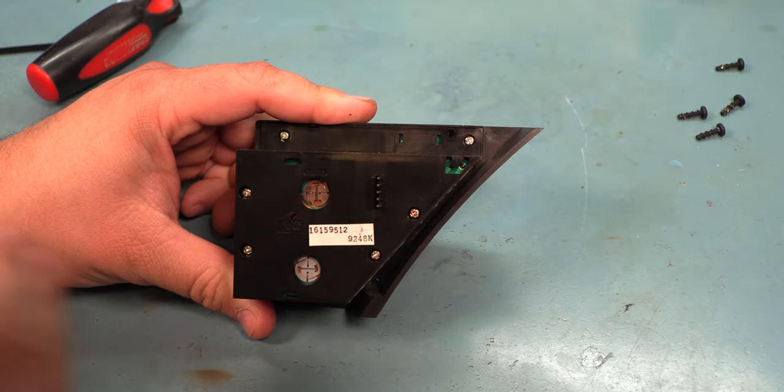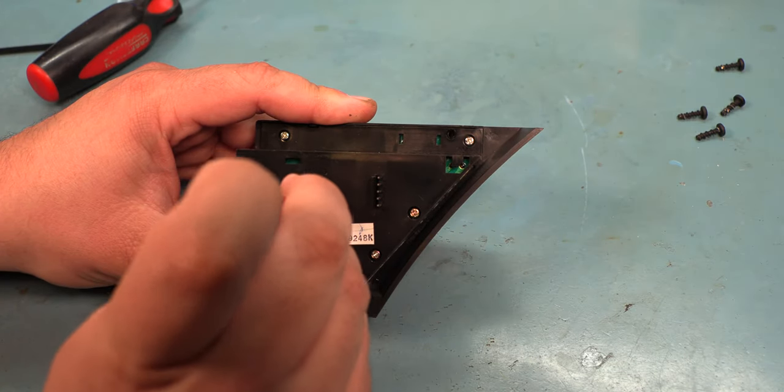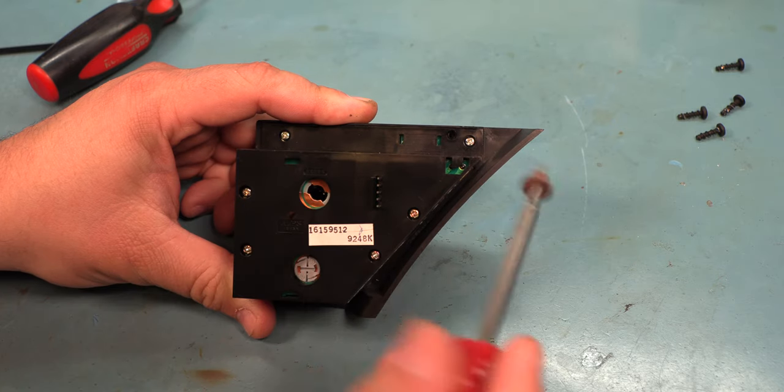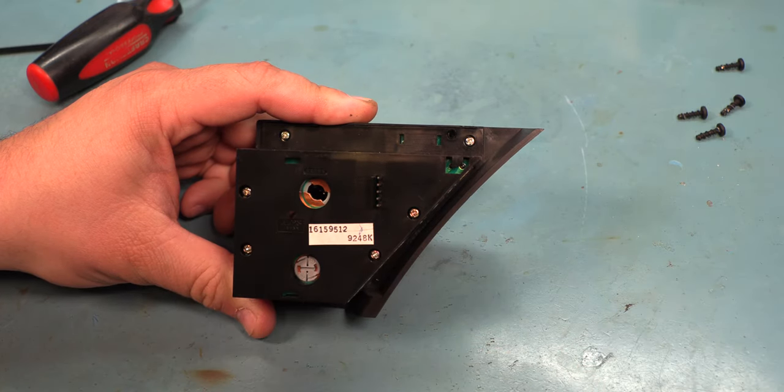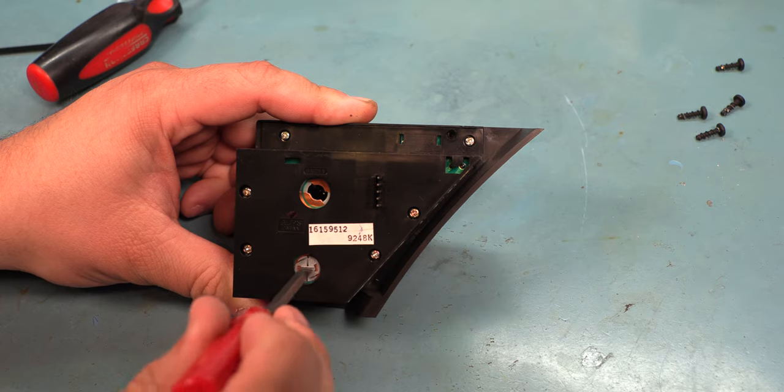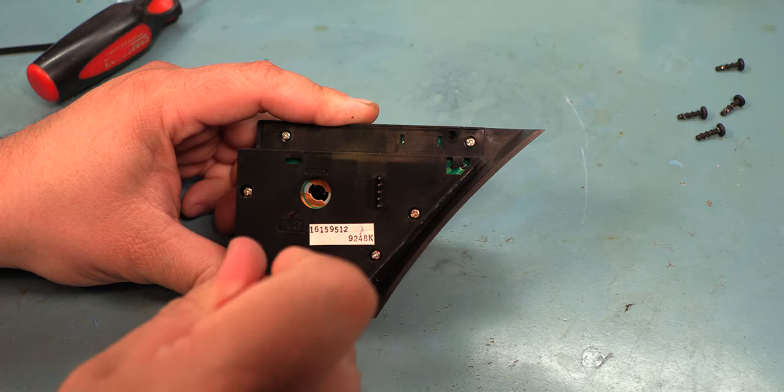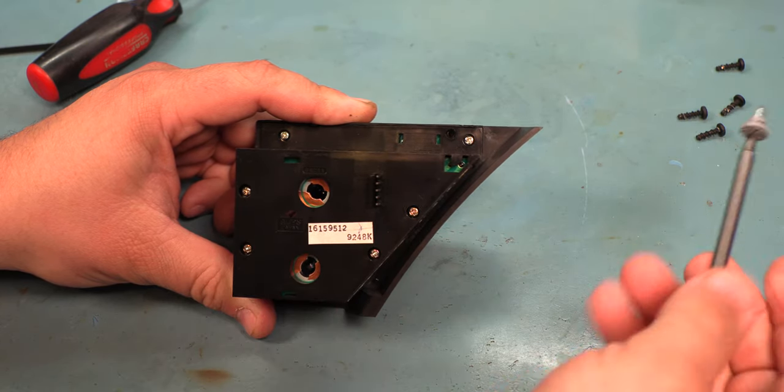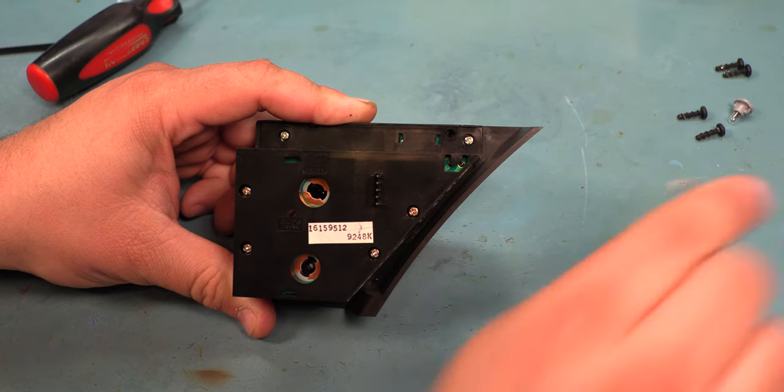Next we're going to use a small flat blade screwdriver to remove the two bulbs. We'll rotate each about 1/16th of a turn counterclockwise and lift it away from the housing.